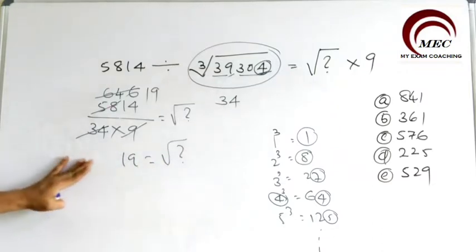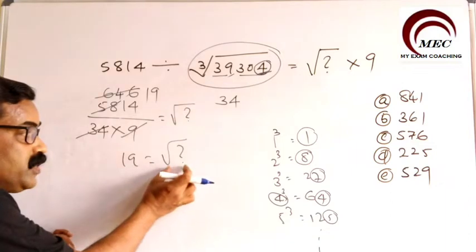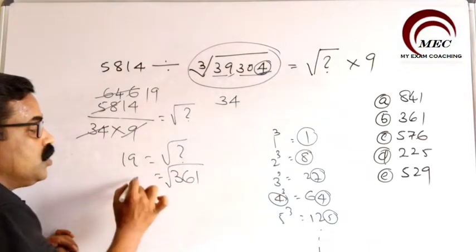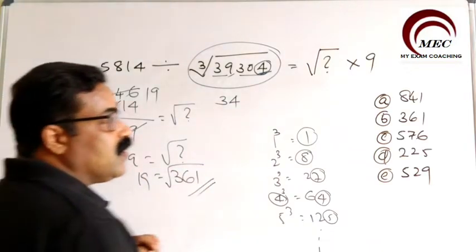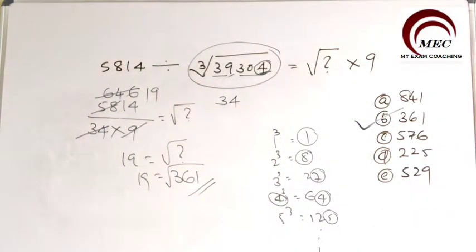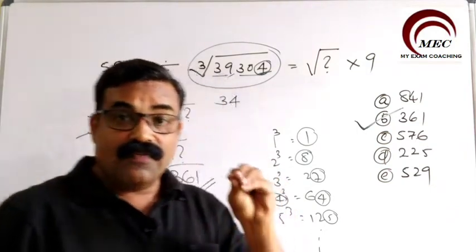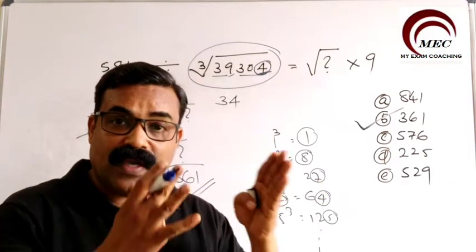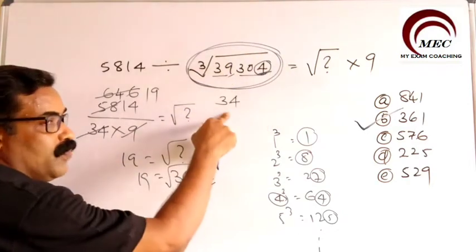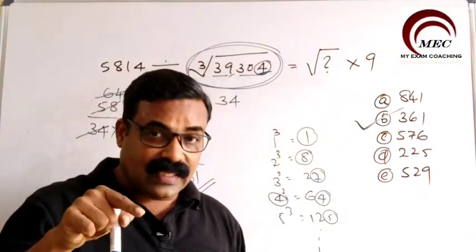That is why I told you students: you have to remember the squares and square roots up to 30. Which number has a square root of 19? We know the square root of 361 is 19. So 361 is the correct option from the given options. The important thing we need to understand here is how to find the cube root of a given number. We got the cube root of this number as 34, which is already explained in the previous video.